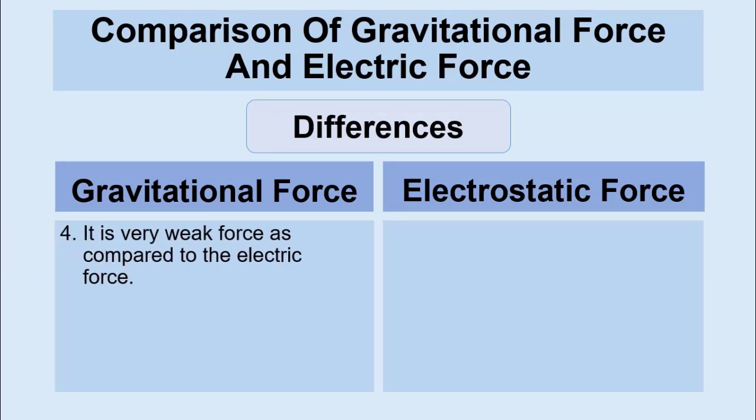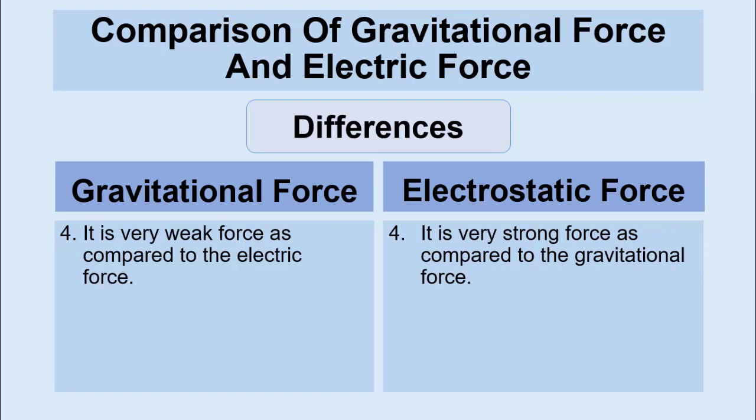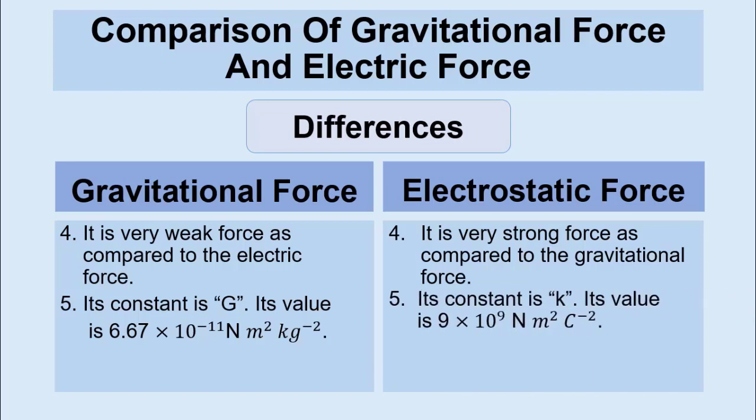Gravitational force is very weak force as compared to the electric force. This can be easily understood through comparing the values of their constants. The value of gravitational constant G is 6.67 into 10 raised to the power minus 11 Newton meter square per kg square, which is very small value. But the value of constant of proportionality for electric force is much more greater than gravitational constant. It is 9 into 10 raised to the power 9 Newton meter square per coulomb square.